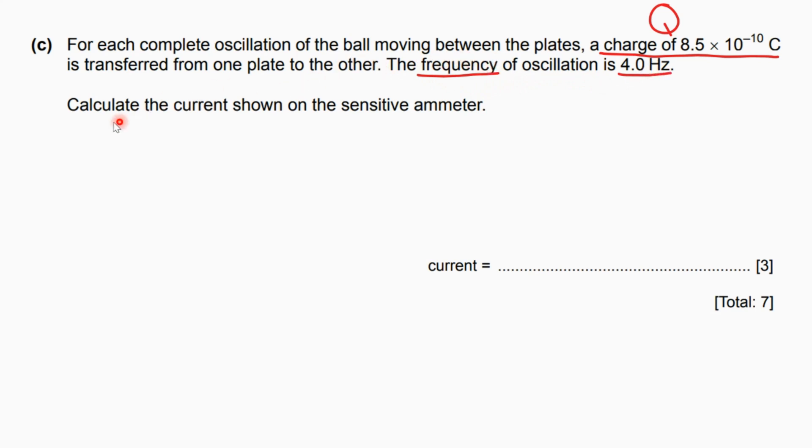Now to calculate the current, there's only one formula linking I, which is the electric current, and Q, which is the electric charge divided by the time taken for the oscillation. Unfortunately we don't have the time taken, but the examiner gave us the frequency of the oscillation.